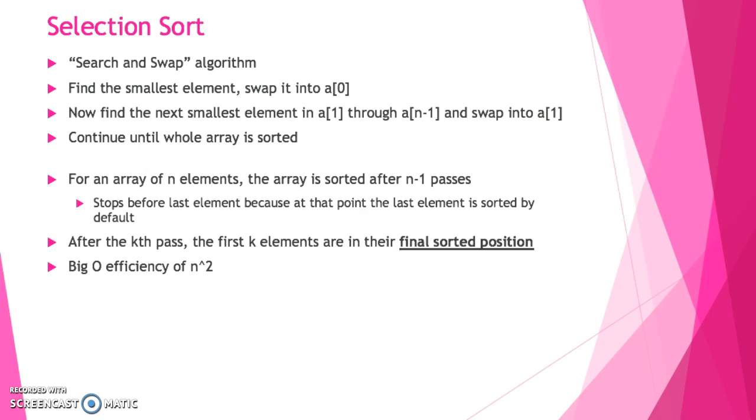Selection sort is our search and swap algorithm. Essentially the way this algorithm works is it takes a look at an entire array and it finds the smallest element in the array, and it swaps this element into the first position, position 0. And then that position is done, so it steps off to the side. After that, the algorithm now finds the next smallest element from index 1 until the end and swaps it into position 1, then finds the next smallest element and swaps it into position 2, and so forth. This continues until the whole array is sorted.